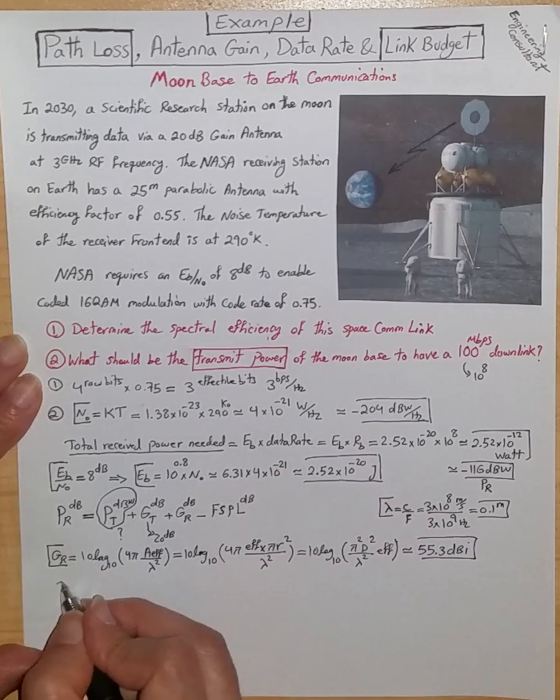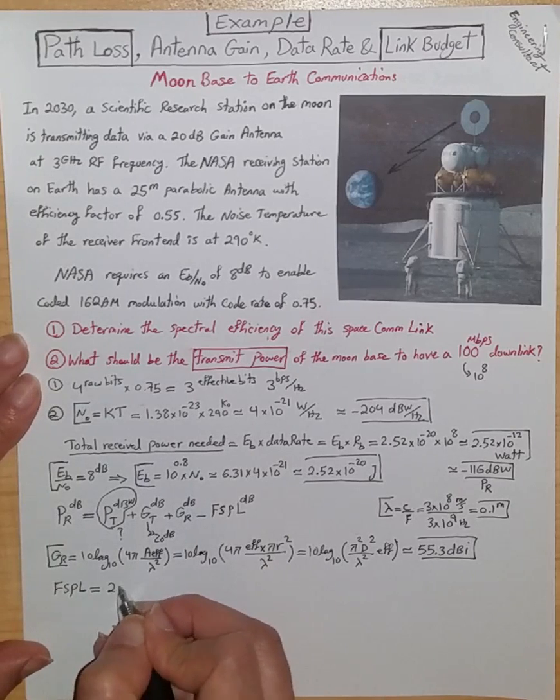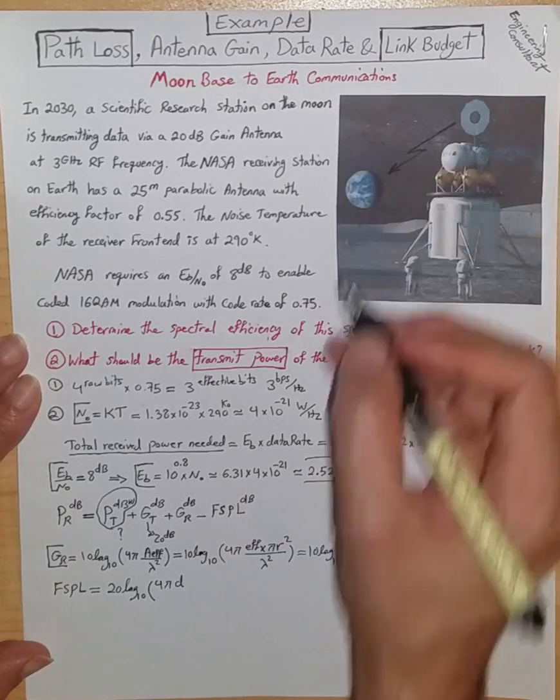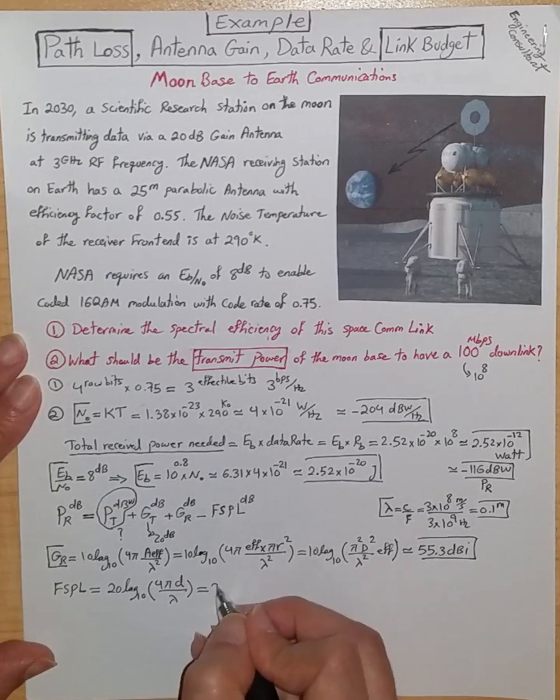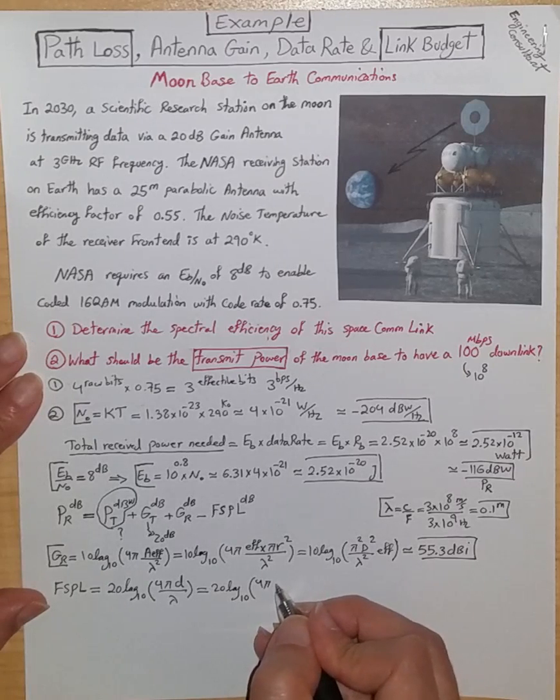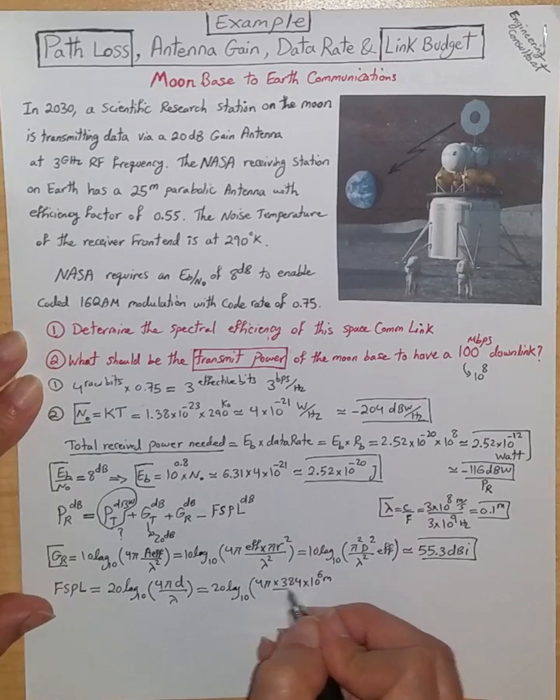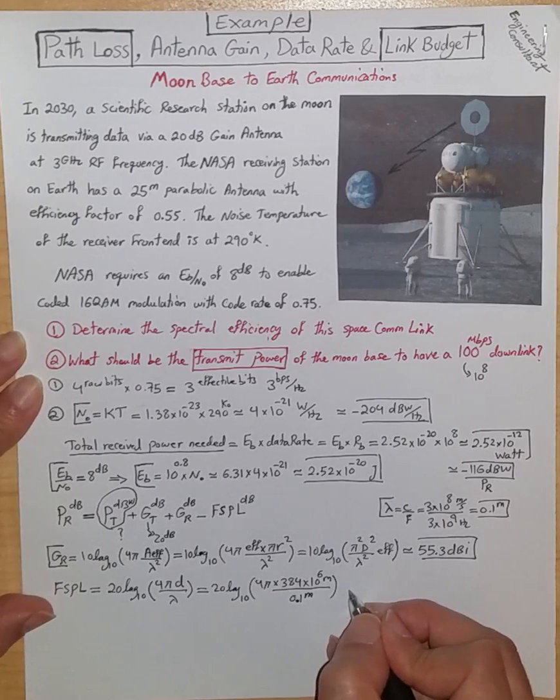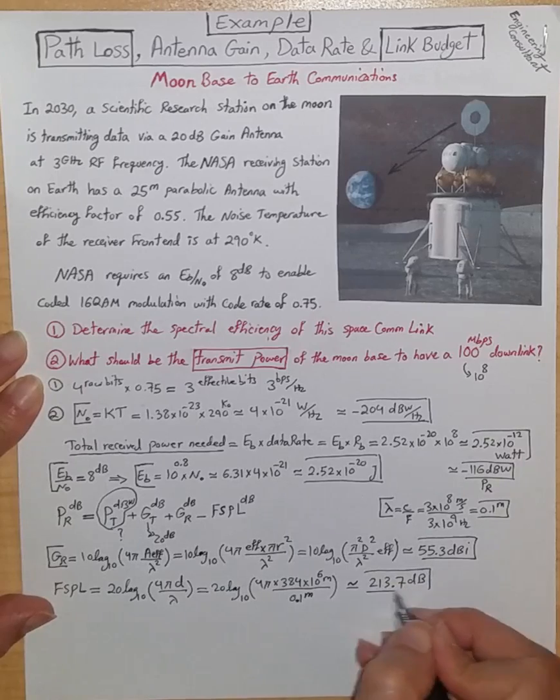Now, the only unknown remaining is free space path loss in dB, which is the easiest part to compute. It is just as simple as 20 log 10 of 4 pi, the distance between the transmit on the moon and receive on the earth, divided by lambda. We know roughly that the distance between earth and moon is 384,000 kilometers, so it is 384 times 10 to the 6 meter, divided by lambda, which is 0.1 meter. If you calculate this, you end up with a free space path loss roughly 213.7 dB. That's a very large path loss.